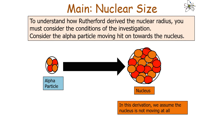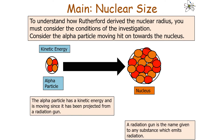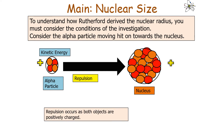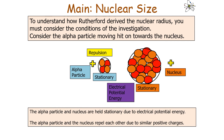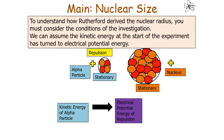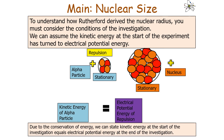To understand how Rutherford derived the nuclear radius, consider the conditions of the investigation and an alpha particle moving towards the nucleus. In this derivation we assume the nucleus is not moving at all. The alpha particle has kinetic energy since it is being projected from a radiation gun — a name given to any substance which emits radiation. As the alpha particle approaches the nucleus, repulsion occurs as both objects are positively charged. The interaction of the electromagnetic force between the particles causes the energy store to change: the kinetic energy at the start transfers into electrical potential energy, and due to conservation of energy, the initial kinetic energy equals the electrical potential energy at the end.